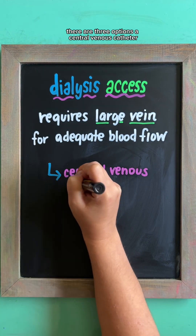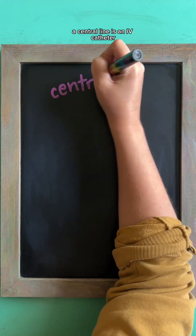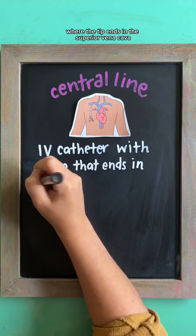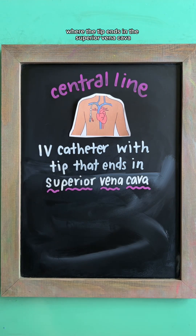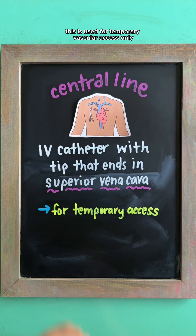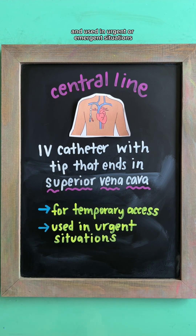A central venous catheter is an IV catheter where the tip ends in the superior vena cava. This is used for temporary vascular access only and is used in urgent or emergent situations.